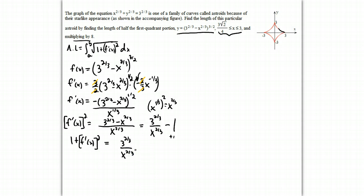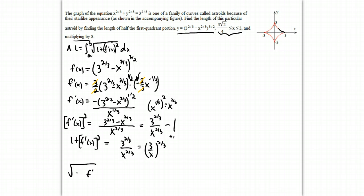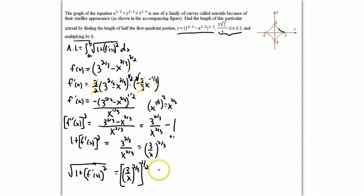We can write that as (3/x)^(2/3). The next step in the process is to take the square root of (3/x)^(2/3), and taking the square root of something to the 2/3 power gives us (3/x)^(1/3). That is what we need to integrate.